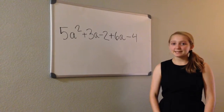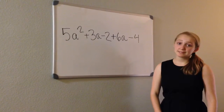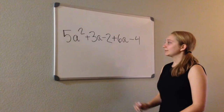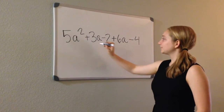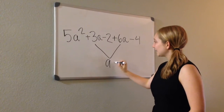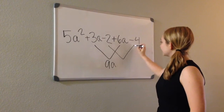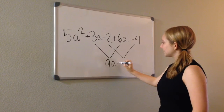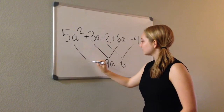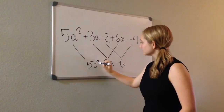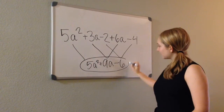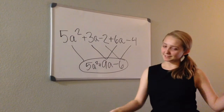Sometimes expressions can get way too long, but don't let this intimidate you. All you have to do is combine like terms. For example, 3A and 6A combine to be 9A, and negative 2 and negative 4 combine to be negative 6. Drop down that 5A squared, and you have just combined all of your terms.